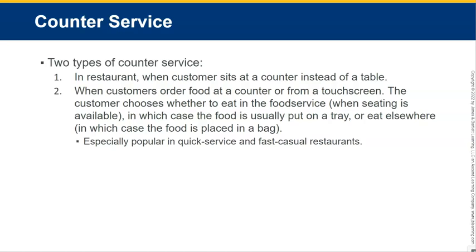There are two types of counter service. In a restaurant, when the customer sits at a counter instead of a table would be one example. When customers order food at a counter or from a touch screen, the customer chooses whether to eat in — when seating is available, in which case the food is usually put on a tray — or eat elsewhere, in which case the food is placed in a bag.